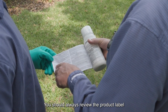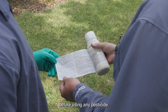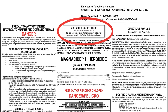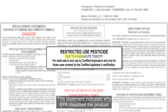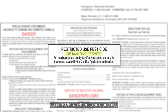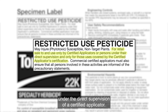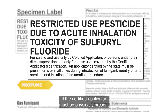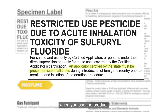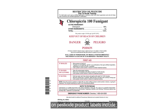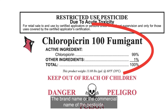You should always review the product label before using any pesticide. Restricted-use pesticides will contain a restricted-use pesticide statement, enclosed in a box located at the top of the front panel of the product label. This statement indicates why the EPA classified the product as an RUP, whether its sale and use is limited to certified applicators only or also to non-certified applicators under the direct supervision of a certified applicator. This statement will also let you know if the certified applicator must be physically present when you use the product. Other important information includes the brand name or the commercial name of the pesticide, usually the biggest, most noticeable word on the front of the label.